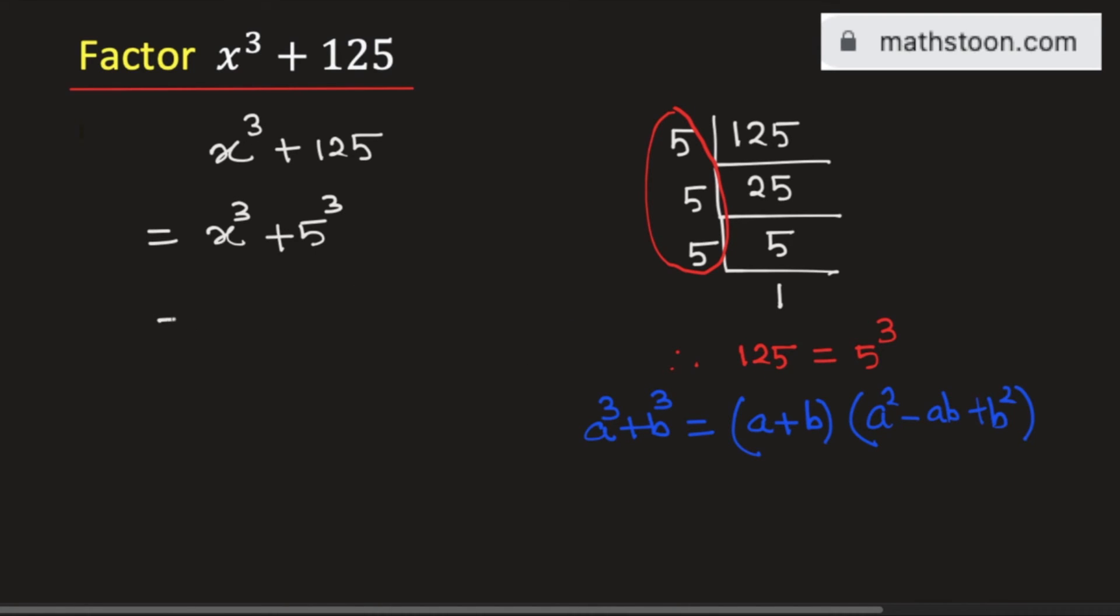So applying this formula here, we will get x plus 5 times x square minus x times 5 plus 5 square.